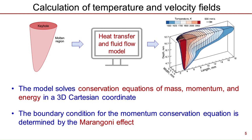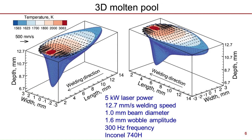The governing equations were discretized in a 3D Cartesian coordinate system using the control volume method, where the computational domain was divided into small rectangular control volumes. The boundary condition for the momentum conservation equation was determined by the Marangoni effect. The model outputs 3D temperature and velocity fields.